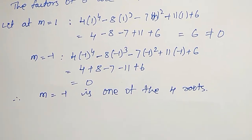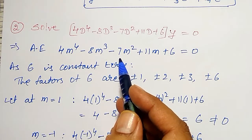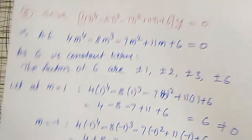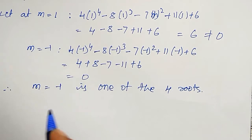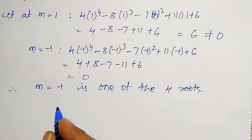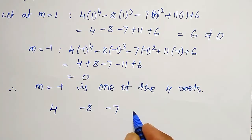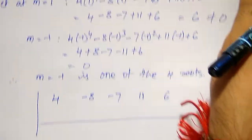To find out other 3 roots, the biquadratic I will reduce it into cubic first, then I will find out the roots. That is synthetic division method. Therefore, I will write the coefficients of that biquadratic: 4, -8, -7, 11, and 6. This is divided synthetically by -1. M = -1 I will choose here.